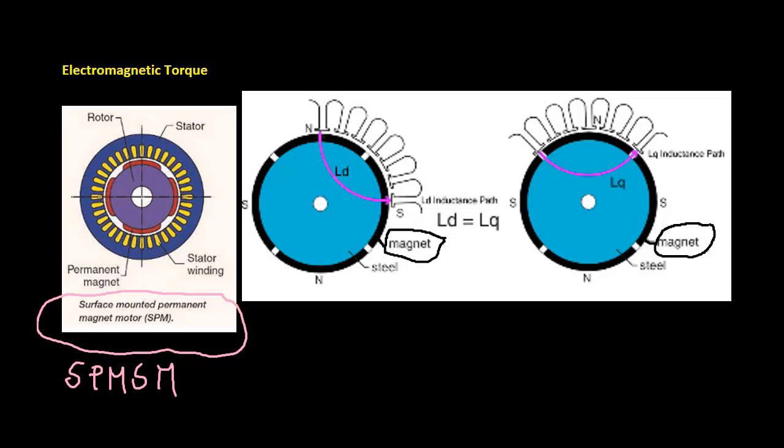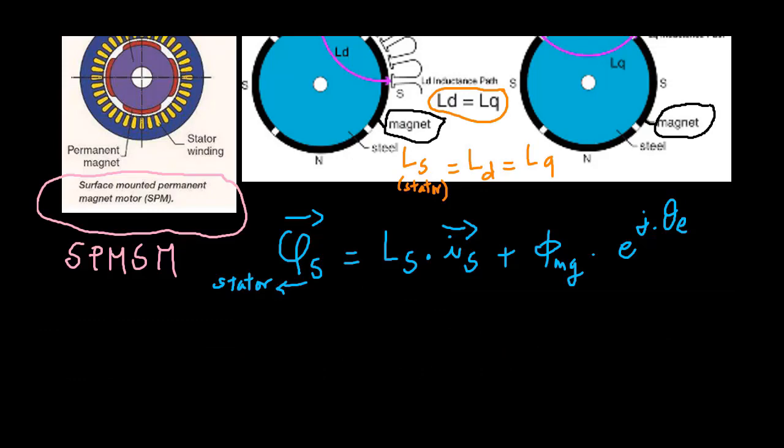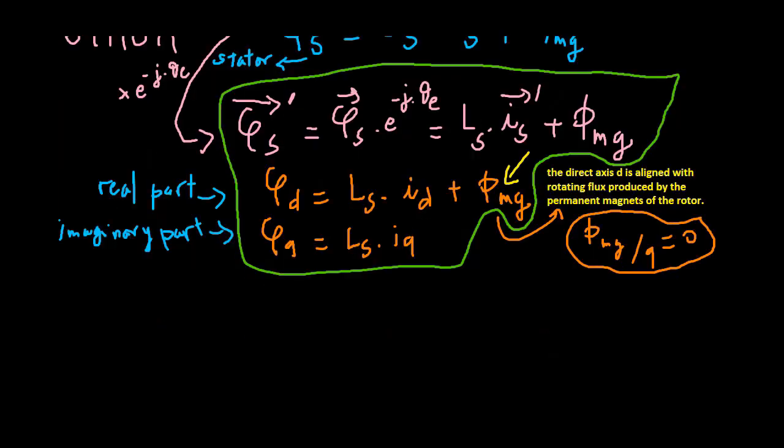The surface mounted PMSM, the DQ axis inductance is equal to each other due to the uniform air gap. Thus the stator flux in alpha beta reference frame is as seen in last video. Similarly, the stator flux can also be represented in the DQ frame, by rotating the flux vector clockwise by theta E. Where the flux phi mg induced by the permanent magnets of the rotor is aligned with rotor and its Q axis component is zero.